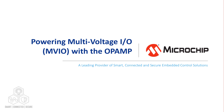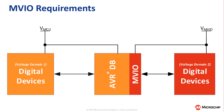If you haven't seen the introductory video for MVIO, I have linked it in the video description. One of the requirements to use MVIO is a secondary power supply, which sets the operating level for these IO. Generally, the MVIO does not require a lot of current, so the integrated op-amps in the microcontroller can be used.